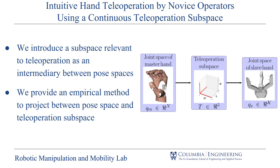The method we propose uses a subspace relevant to teleoperation as an intermediary between the pose spaces of the two different hands. Our method enables teleoperation by projecting the pose of the master hand into the defined teleoperation subspace, which it shares with the slave hand, and then projecting from the teleoperation subspace into the pose space of the slave hand. We introduce this continuous subspace and provide an empirical method to project between pose space and teleoperation subspace.